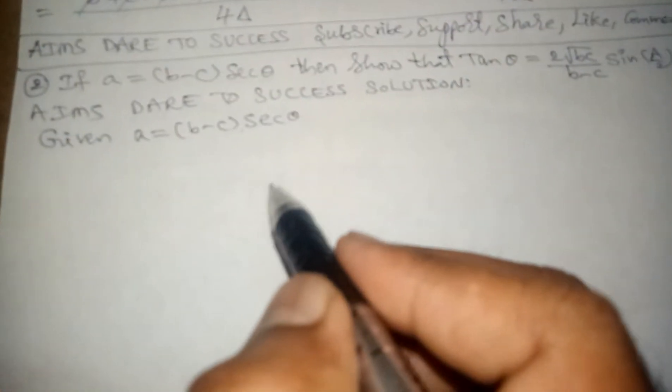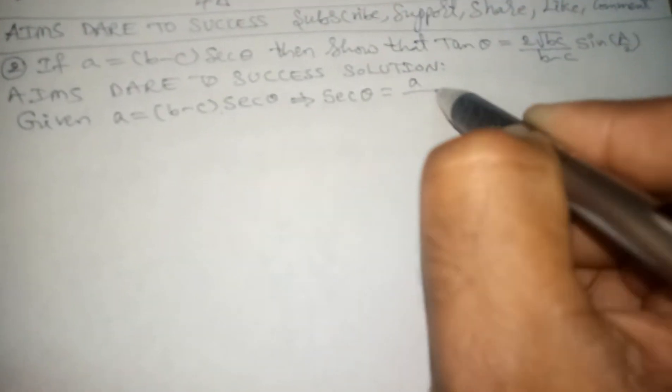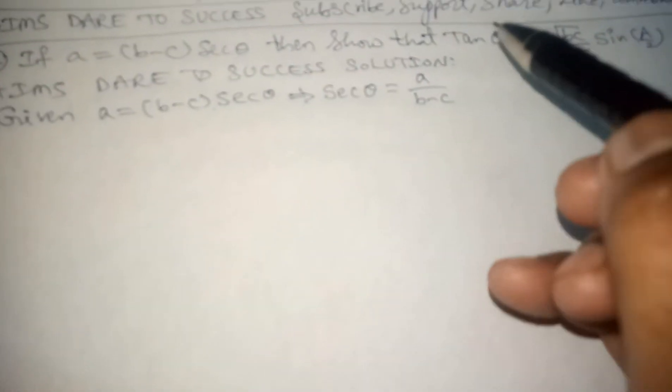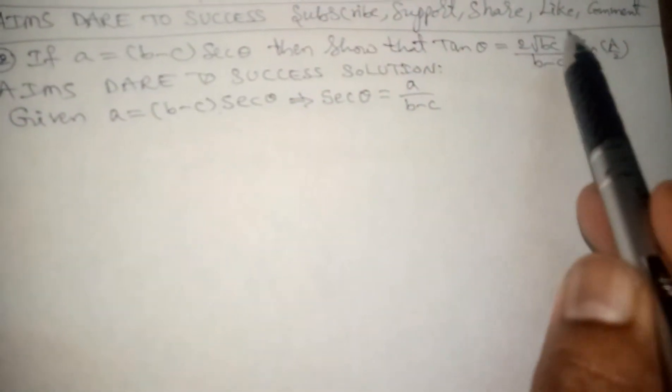The given value is a equals (b minus c) times secant theta. Bringing (b minus c) to this side, I write secant theta equals a divided by (b minus c). The given value is in terms of secant theta, and the required value to find is in terms of tan theta. From trigonometry, I am writing the formula.